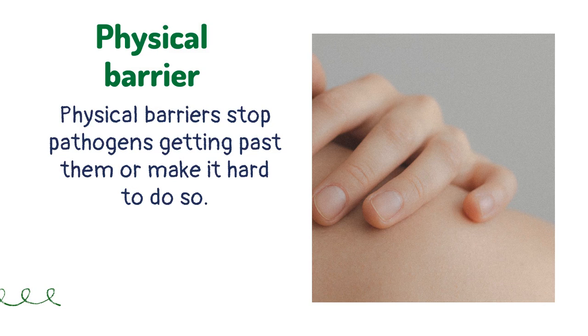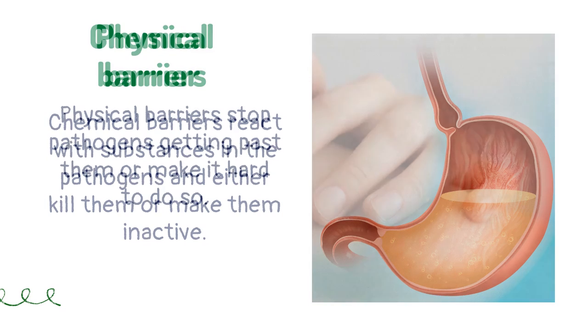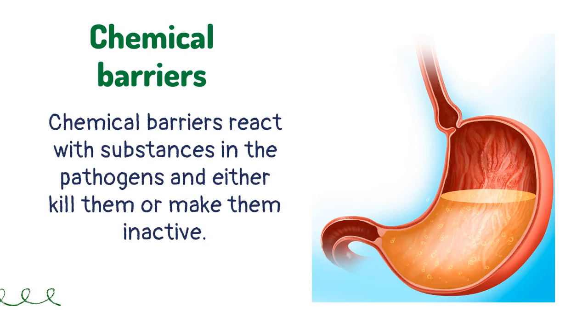Physical barriers stop pathogens getting past them or make it hard to do so. An example of a physical barrier is the skin. Chemical barriers react with substances in the pathogens and either kill them or make them inactive.